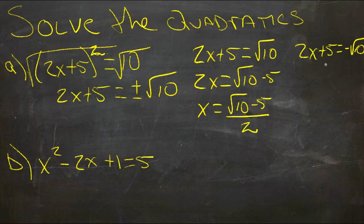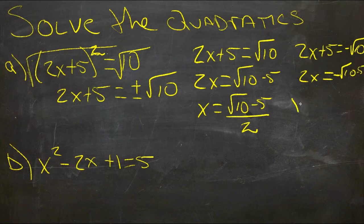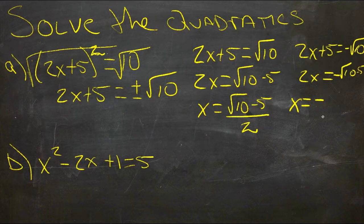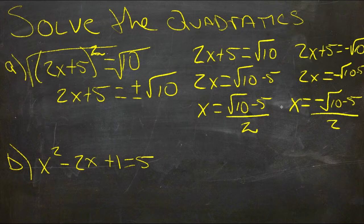And then over here we have 2x is equal to negative root 10 minus 5, and x is equal to negative root 10 minus 5 over 2. So really we end up with positive negative root 10 minus 5 over 2 as our two answers.